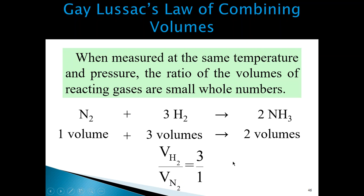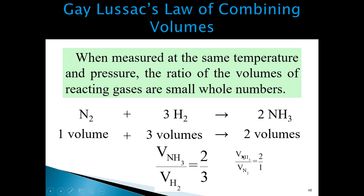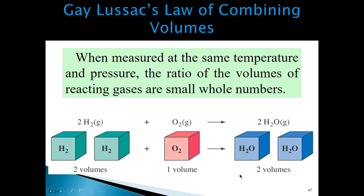We can establish volume ratios, which are basically the same as the mole ratios. The volume ratio between hydrogen and nitrogen would be three to one, as indicated by the coefficients. The volume ratio between ammonia and hydrogen would be two to three, and the volume ratio between ammonia and nitrogen would be two to one. Another example is the reaction between hydrogen gas and oxygen gas to form water vapor — again, the mole ratios are the same as the volume ratios as long as the temperatures and pressures of all the gases are the same.